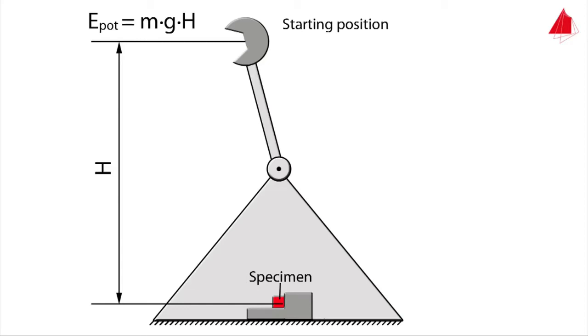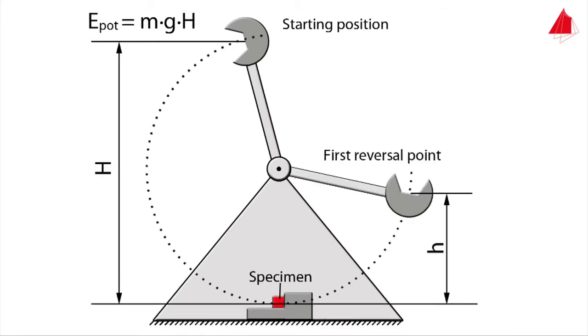After the pendulum has been released, the hammer moves downwards, hits the specimen and then only swings to height small h. Exactly at the first reversal point the pendulum again only has potential energy which is m times g times small h.